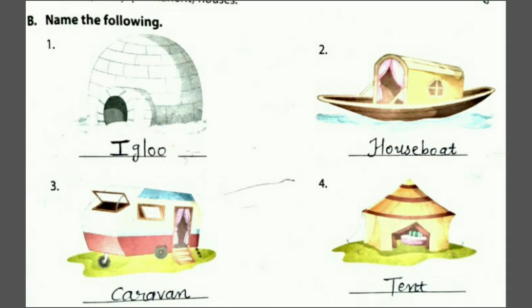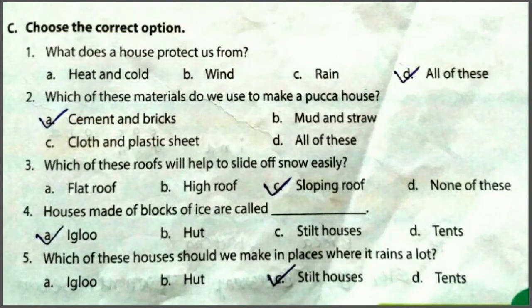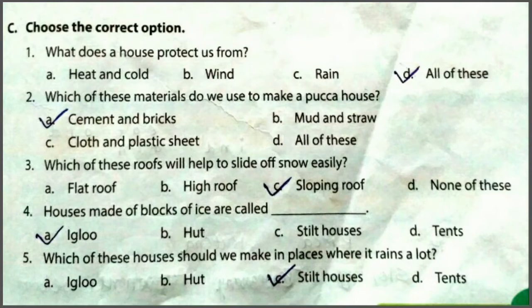Fourth question: what does a house protect us from? Heat and cold, wind, या rain, या ये सब से? तो answer आएगा all of these. क्योंकि house हमें गर्मी से, ठंडी से, ज्यादा बारिस से और हवा से भी बचाता है.